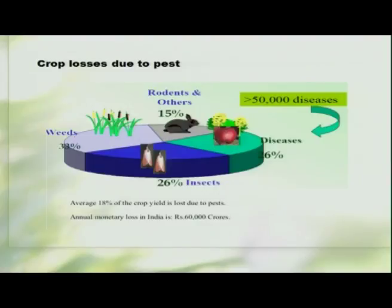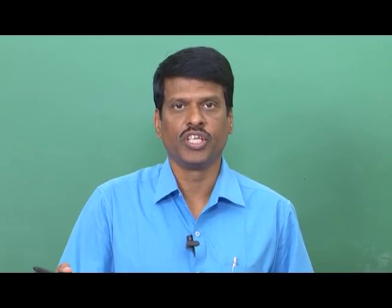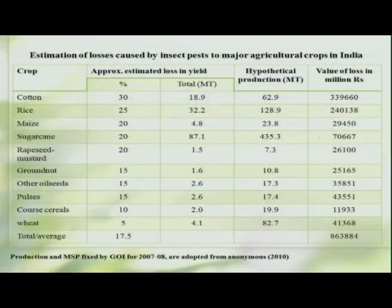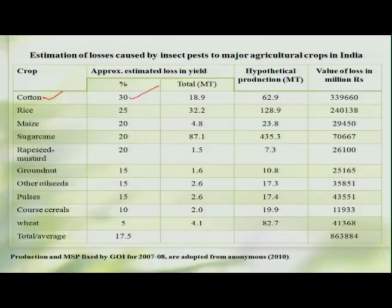What is the extent of the loss that insects can cause? Along with other groups of organisms, insects are believed to contribute nearly 26 percent of the loss to the cropping ecosystem. Of course weeds take a major toll, but insects and diseases are among the major causes. It has been estimated that annually around 60,000 crores of rupees are lost due to damage by insects on various agricultural crops. Looking at the table, in cotton nearly 30 percent of crop loss is caused by insects, in rice around 25 percent, and on average around 18 percent of economic loss is caused by insects.